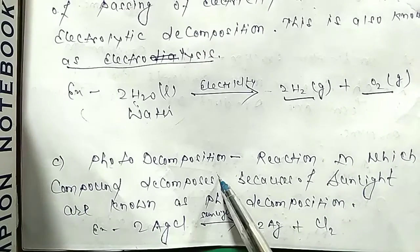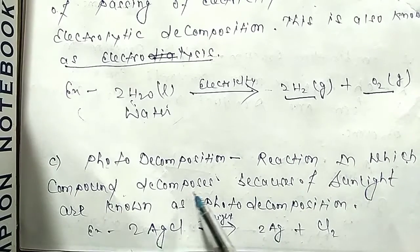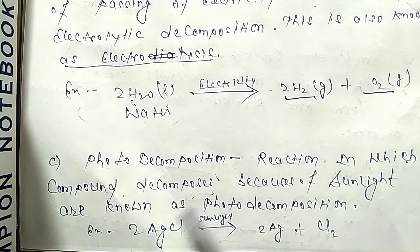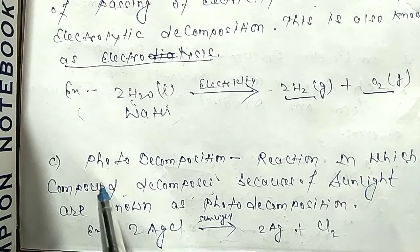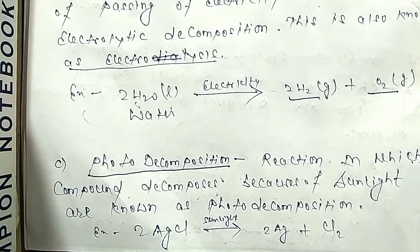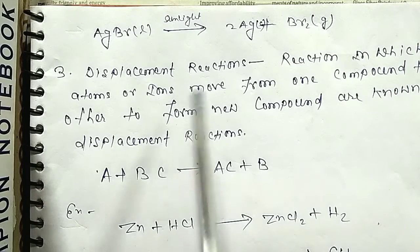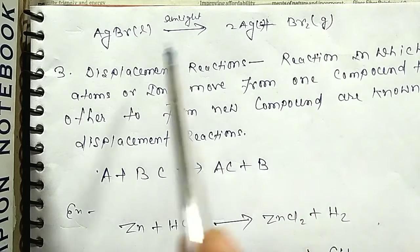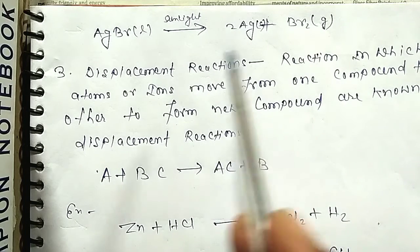Third is photo decomposition: a reaction in which a compound decomposes because of sunlight is known as photo decomposition. Photo means light — when sunlight causes a compound to decompose, it is photo decomposition.